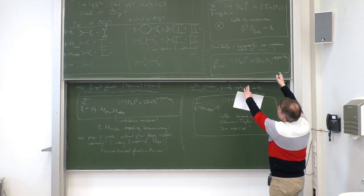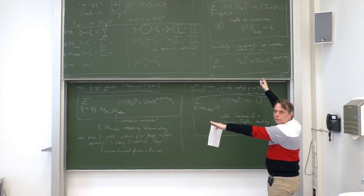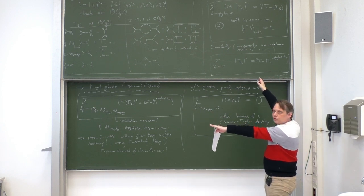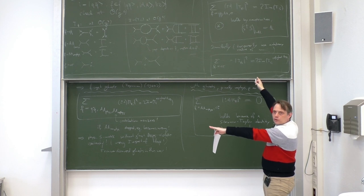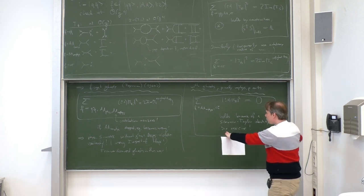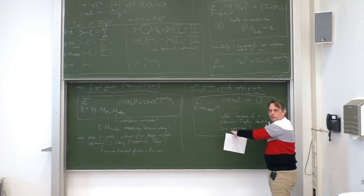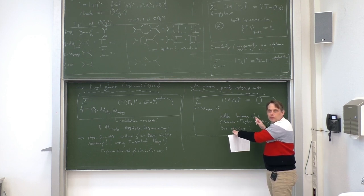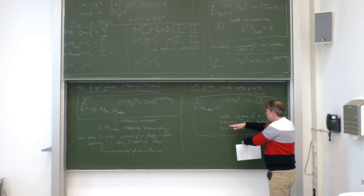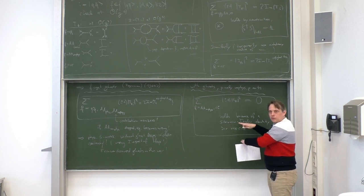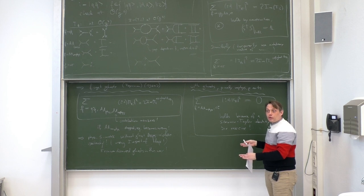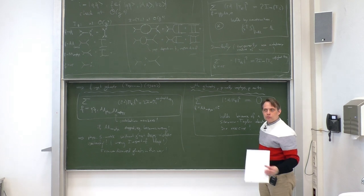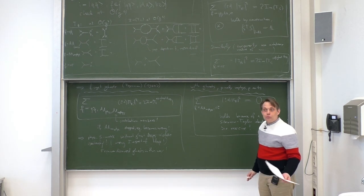In the exercise you will first derive the corresponding Slavnov-Taylor identity by explicitly evaluating the corresponding Feynman diagrams. You will also have an explicit formula for the ±1 here, which comes from the polarization vectors ε for the polarizations of the gluons.